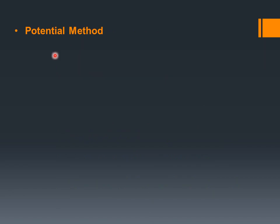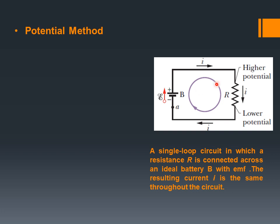The next method is the potential method. This is another method to calculate the current in a single loop circuit — the same circuit: battery, current, resistor, higher potential, lower potential. When the current goes from higher potential to lower potential, the voltage drops. In this single loop circuit, resistance R is connected across an ideal battery with EMF, and the resulting current I is the same through the circuit.